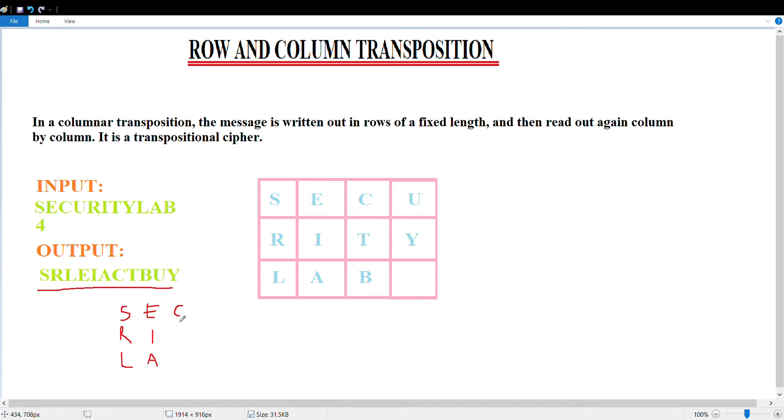Now after writing it column-wise, you have to read it row-wise. Here we get 'security lab'. This is decryption. I hope you're clear with the encryption and decryption for row and column transposition. See you again with another concept, thank you.